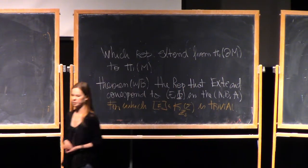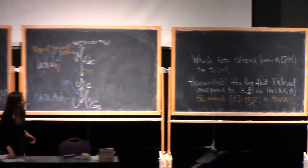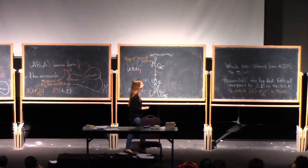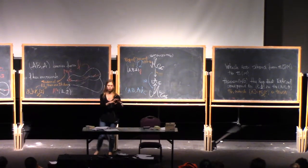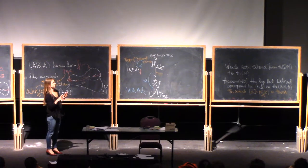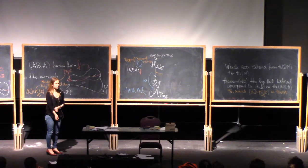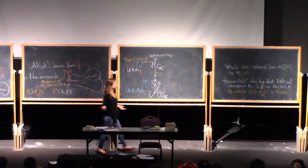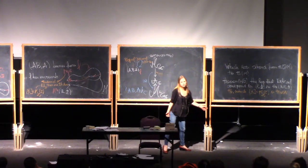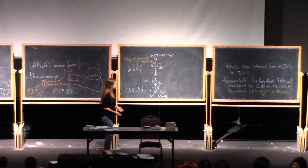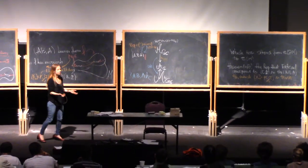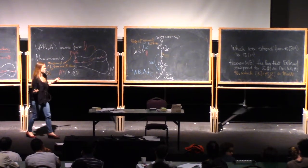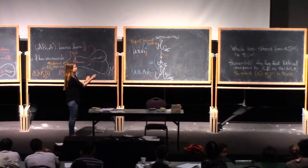So now we know which representations extend. If you wanted to carry on working on this, there is work by Satoshi Nawata where he took a theta graph — a genus-2 theta graph — out of a sphere, looked at the complement and which representations extend, and showed it in terms of a generalized A-polynomial. That should correspond to an ABA brane like this, but that hasn't been shown. And for graphs and links giving higher-genus complements, that's not known from either perspective — neither from the generalized A-polynomial side nor the matching with what we've done.